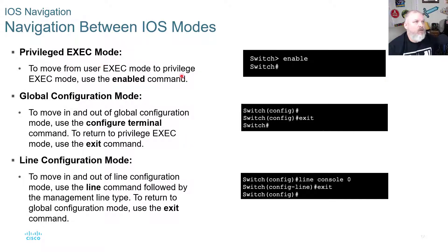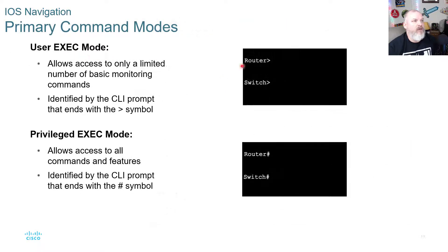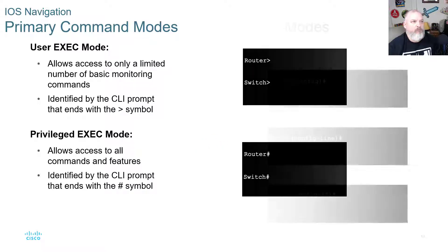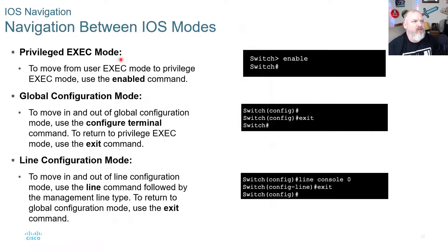To move from User Exec mode to Privilege Exec mode, type 'enable' — you can also use the shortened form. This changes the prompt from the greater-than sign to the pound sign. To enter Global Configuration mode, type 'configure terminal'. To return to Privilege Exec mode from global config, type the 'exit' command. Typing 'exit' again will move you back to User Exec mode.